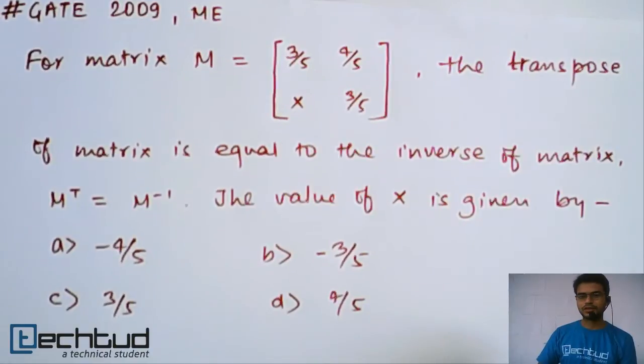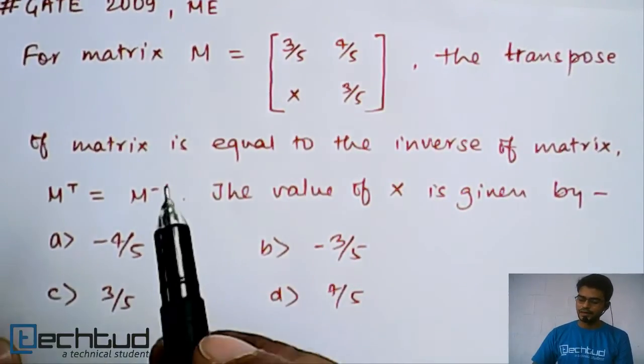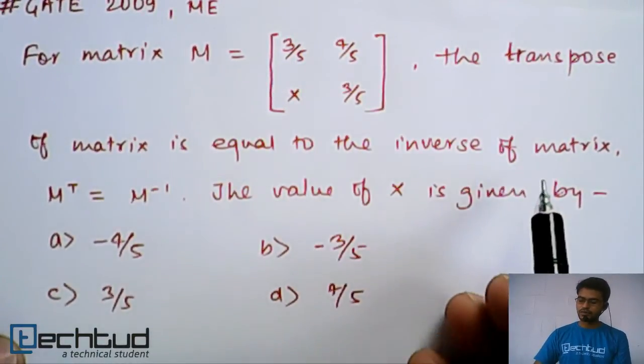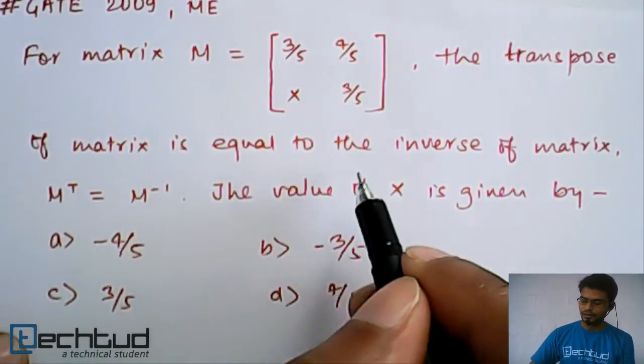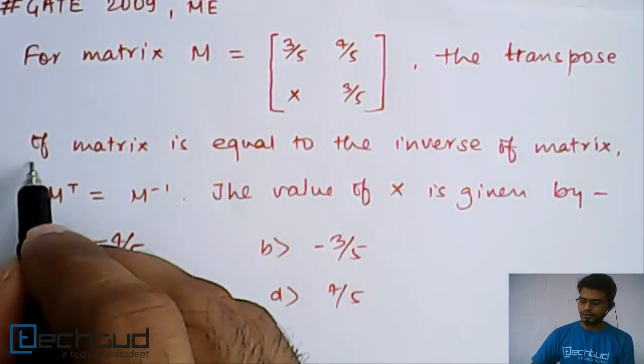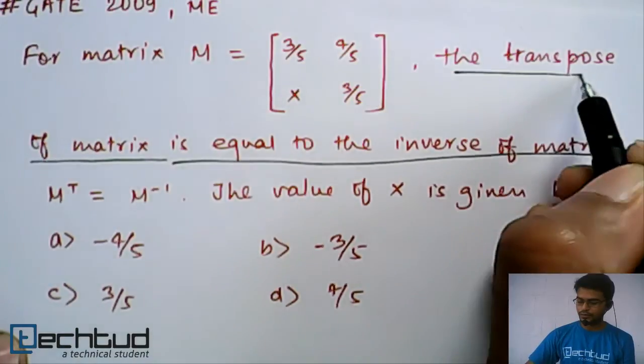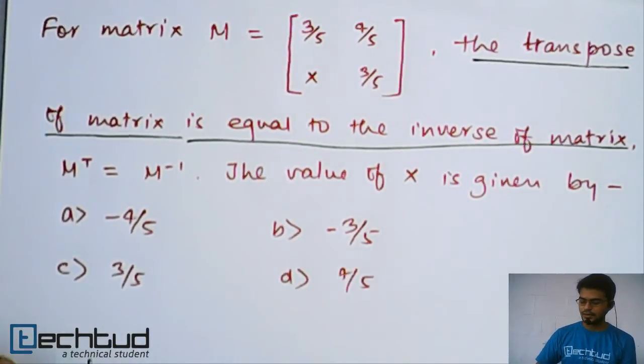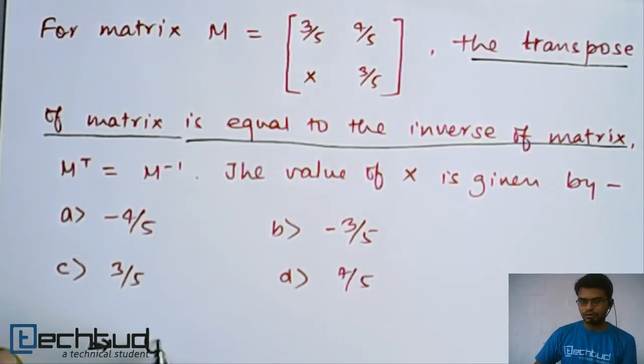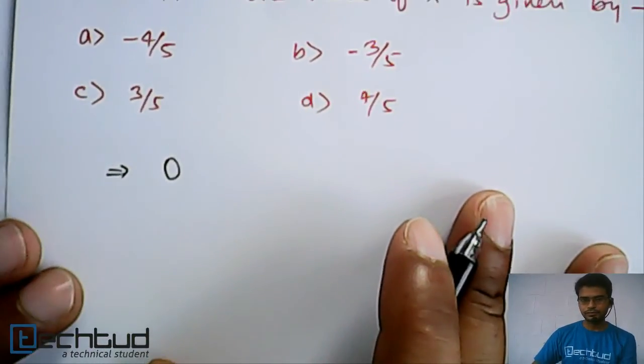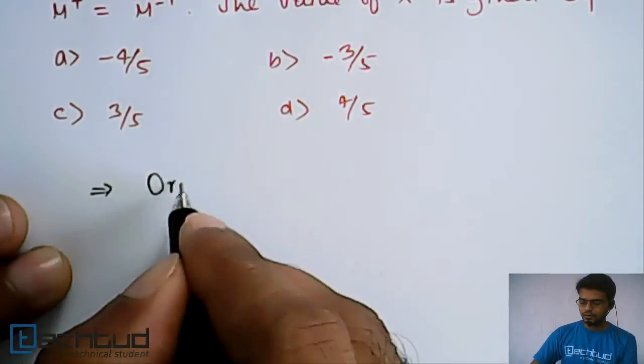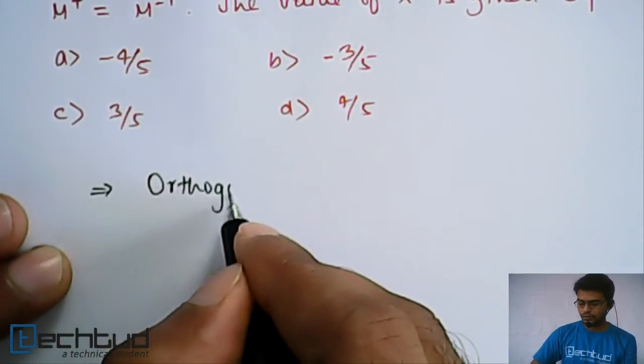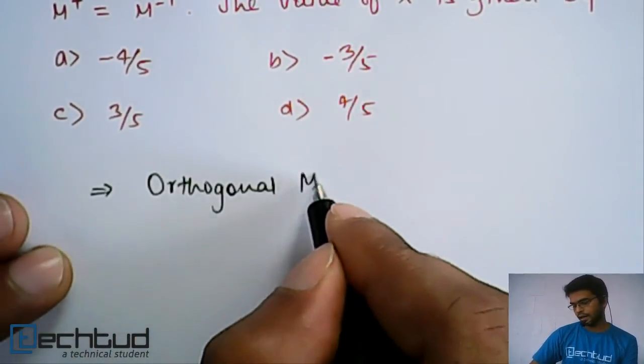But a very simple approach is there. As they are saying that the transpose of the matrix is equal to inverse of the matrix, which means it is an orthogonal matrix.